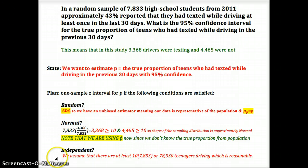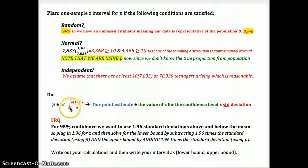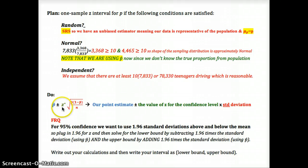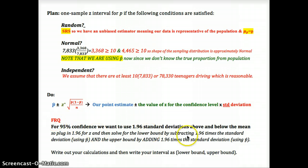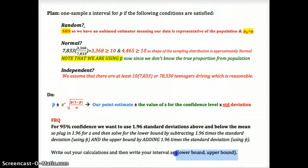For the do step: the confidence interval is given by sample statistic plus or minus the critical score times the standard error. For 95% confidence, use z-star equals 1.96. P-hat is 0.43; plug in the sample size n equals 7,833. Add the margin of error for the upper bound and subtract it for the lower bound. Show your calculations and write your final answer in the format (lower bound, upper bound).